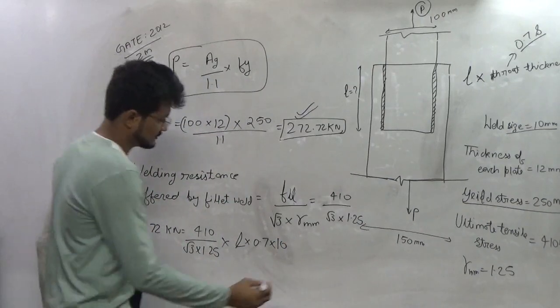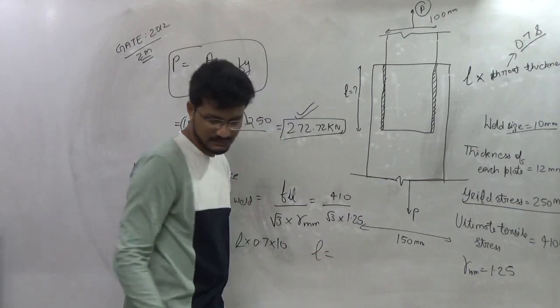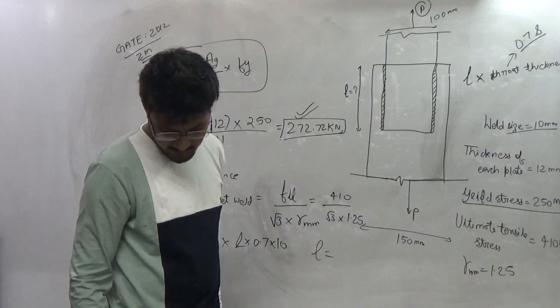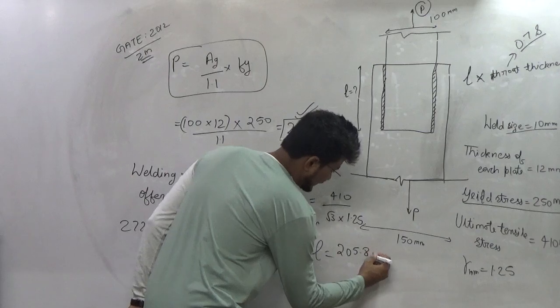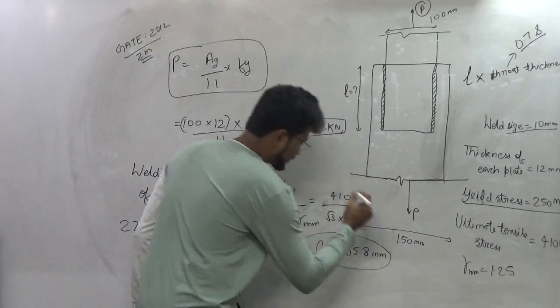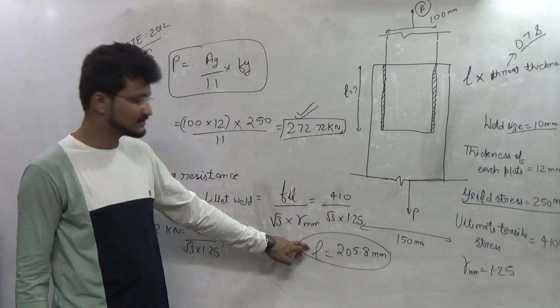So from here length of the weld which is required to transmit this force comes equals to 205.8 mm. This is the complete length of the weld which is required.